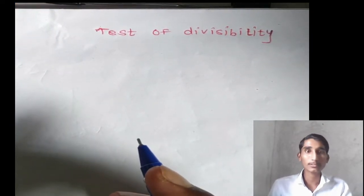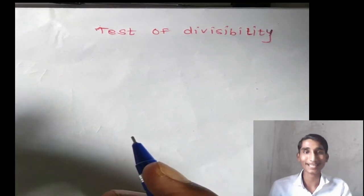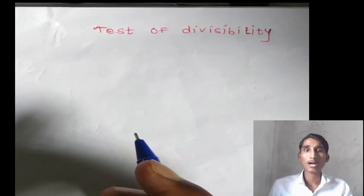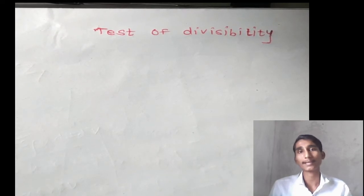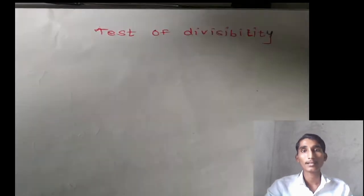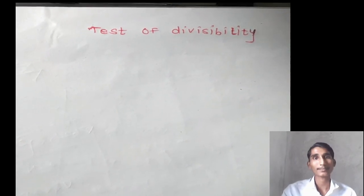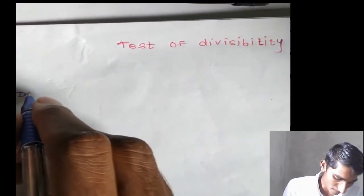We are starting the test of divisibility. As you can see on my screen, I have written 'Test of Divisibility.' We mostly use divisibility criteria from 2 to 5 — divisible by 2, 3, 4, 5, 6, up to 11. We are going to see all of them today. First we will see the theory of divisibility, then solve some examples. As our channel's motto: view the concept, grasp it, and then apply it. The first divisibility is divisibility by 2.